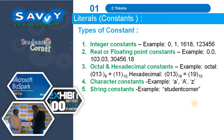The types of constants are: integer constants, real or floating point constants, octal and hexadecimal constants, character constants, and string constants. String constants are indicated with double quotes, while character constants are indicated with single quotes.